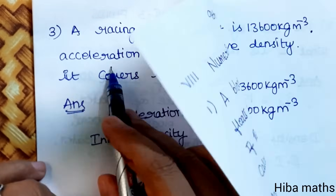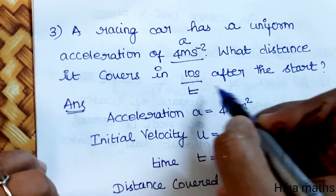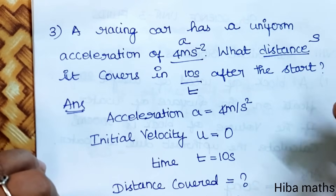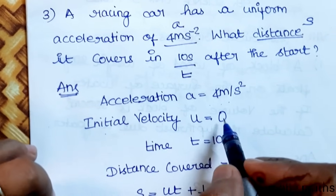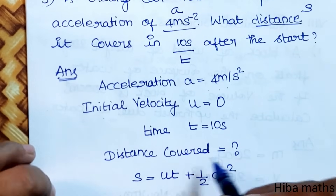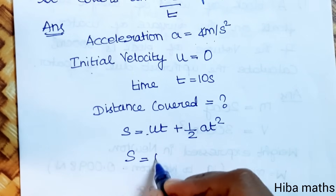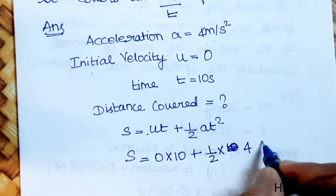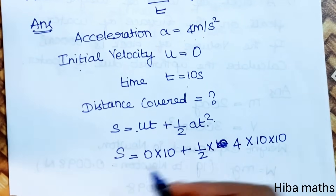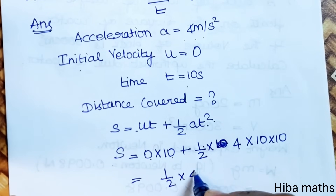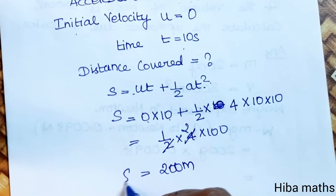Third question: a racing car has a uniform acceleration of 4 meters per second square. What distance is covered in 10 seconds after the start? Given: a equal to 4 m/s², initial velocity u equal to 0, and time t equal to 10 seconds. Using s equals ut plus half into a t square: s equals 0 into 10 plus half into 4 into 100, which gives 2 into 100, equal to 200 meters.